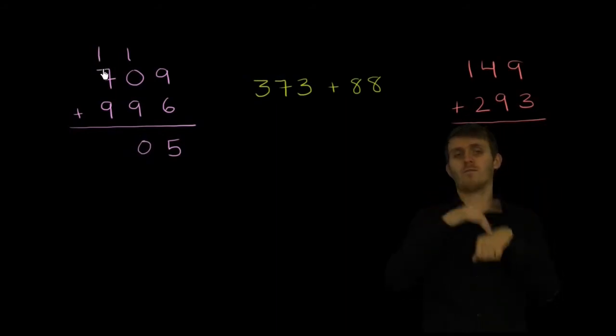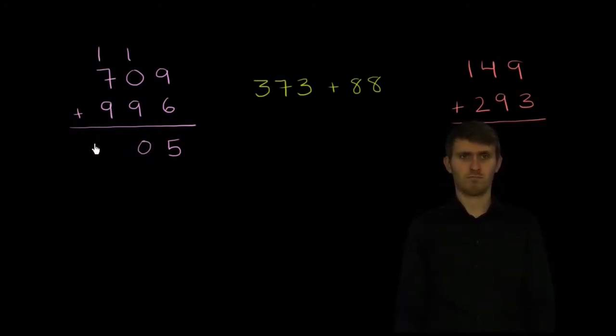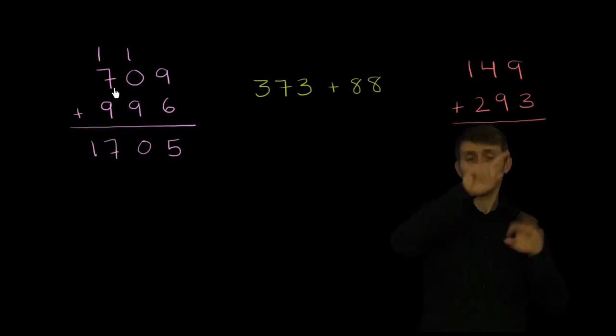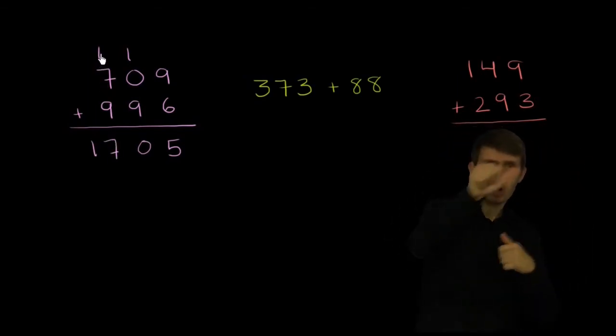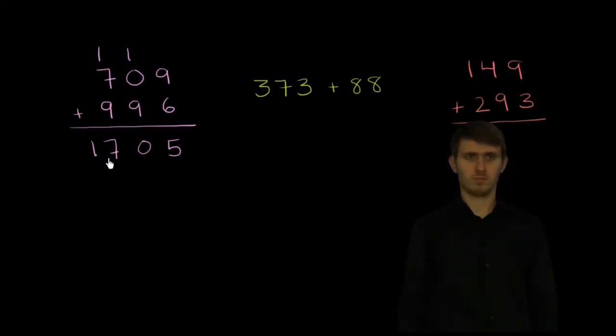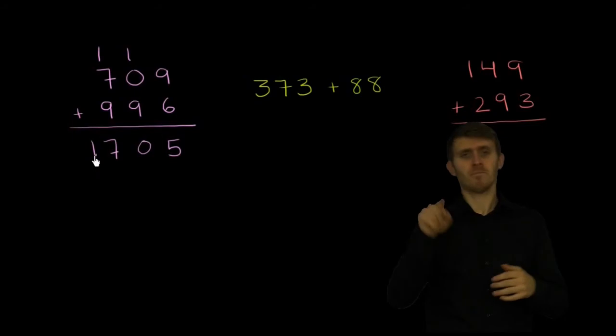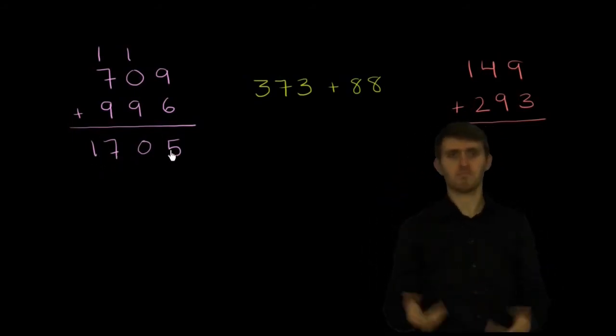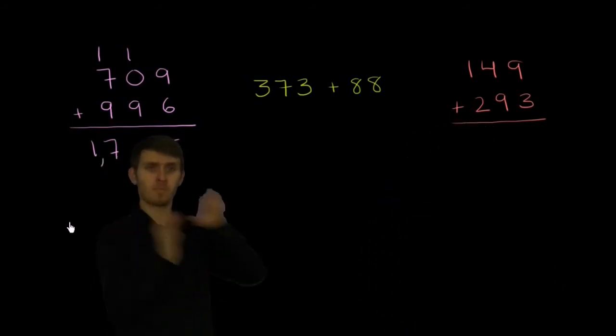So now we have a 1 plus a 7 plus a 9. That is going to be 17. Now we have to remind ourselves, this is in the hundreds place. So this is actually 100 plus 700 plus 900, or 1,700. And of course, we still have this 5 here. And we are done.